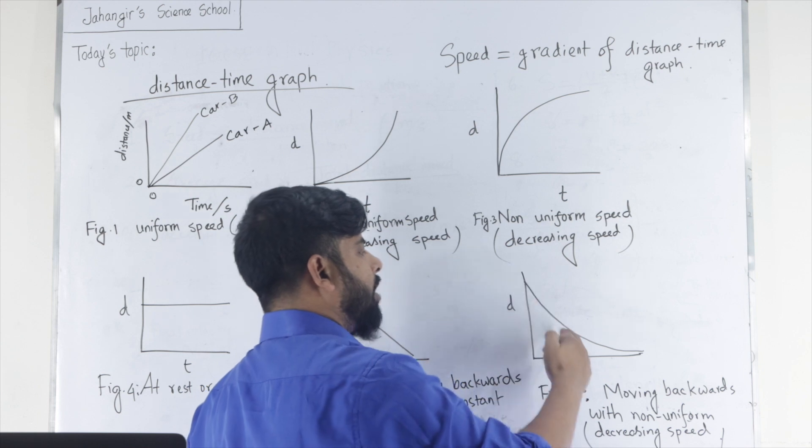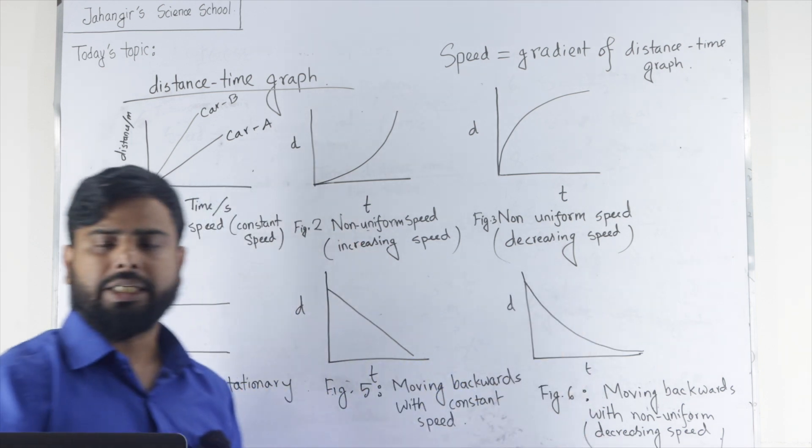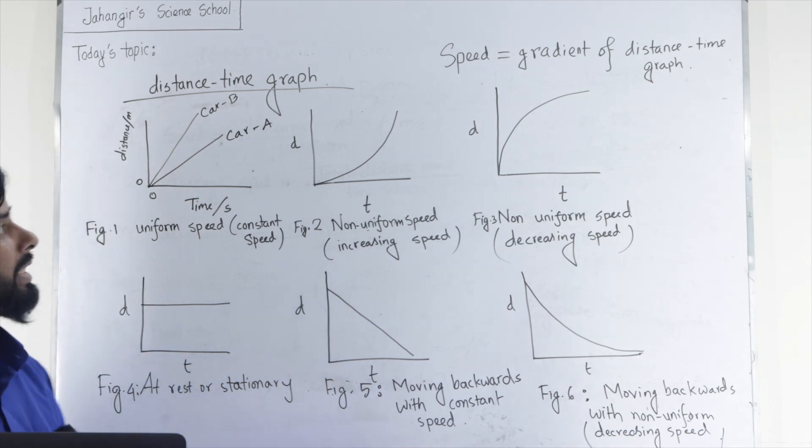Here, gradient of the distance time graph decreases with time. So, it is decreasing speed.